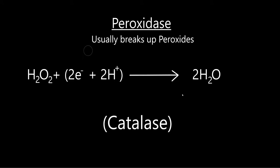Next up we have the peroxidase. Peroxidases usually break up peroxides. For this example we have H2O2, which is hydrogen peroxide. In combination with two electrons and two positively charged hydrogen atoms, these turn into two H2O.